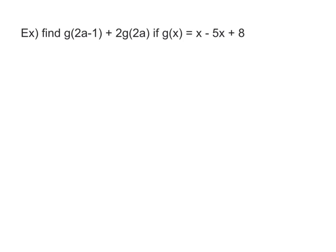Next one, we're going to do basically the same thing, but notice how there's two different parts. I have the g of 2a minus 1. Originally that should be x squared, but I'm just going to do this part first. So it'll be 2a minus 1 squared minus 5 times 2a minus 1 plus 8.